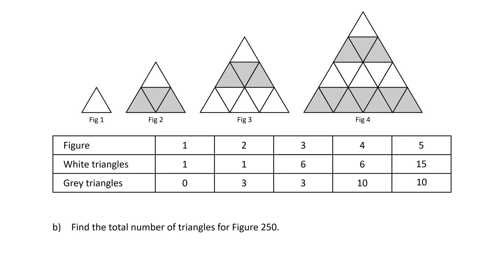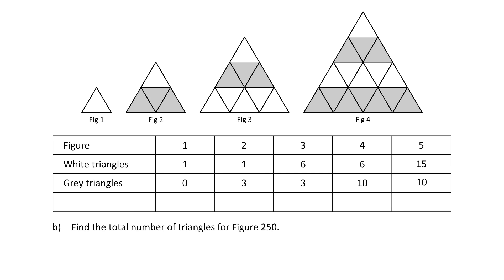Let's now solve part B: find the total number of triangles for figure 250. It will be helpful to add another row to the table with the total number of triangles — the sum of the white and gray triangles. In figure 1, 1 plus 0 equals 1. In figure 2, 1 plus 3 equals 4. In figure 3, 6 plus 3 equals 9. In figure 4, 6 plus 10 equals 16. And in figure 5, 15 plus 10 equals 25.